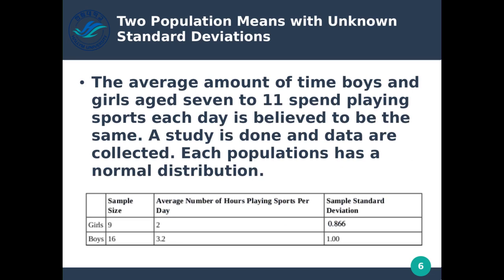The average amount of time boys and girls aged 7 to 11 spend playing sports each day is believed to be the same. This is a hypothesis we can test. A study is done and data are collected. Each population has a normal distribution — there will be some kids that don't play at all and some that play several hours a day, with some mean in between, so it should look fairly normal.